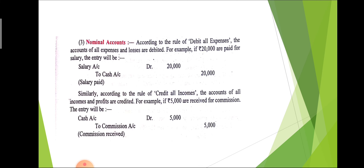The third account is nominal account, which gives the rule: debit all expenses and losses and credit all incomes and gains. For example, if 20,000 are paid for salary, cash goes from the business and salary is one type of expense. The rule says debit all expenses, so salary account is debited and cash account is credited since cash goes from the business. The overall journal entry is: salary account debit to cash account.